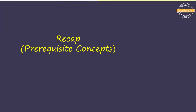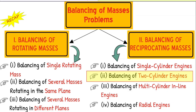Before we proceed, let us do a quick recap about various prerequisite concepts required to understand this topic. We know the classification table of balancing of masses problems. We are going to discuss about balancing of a two-cylinder locomotive engine, which comes under balancing of reciprocating masses.